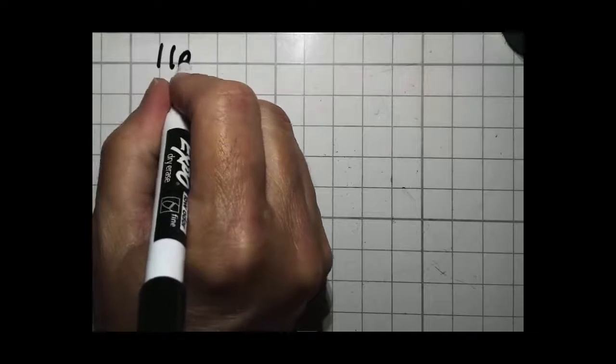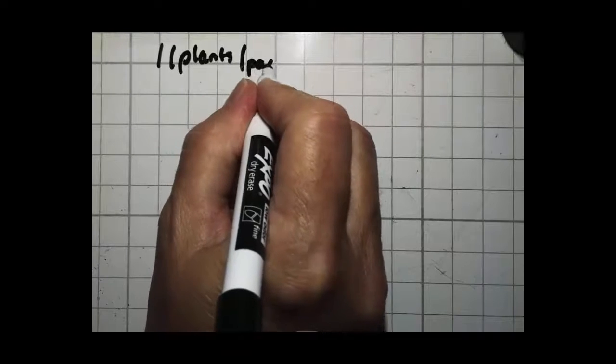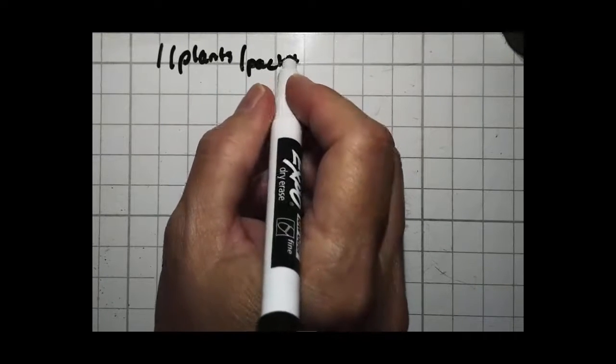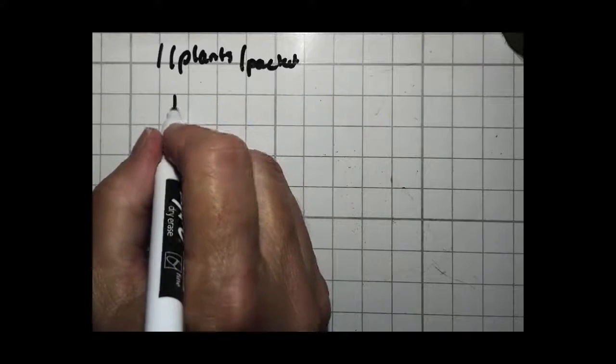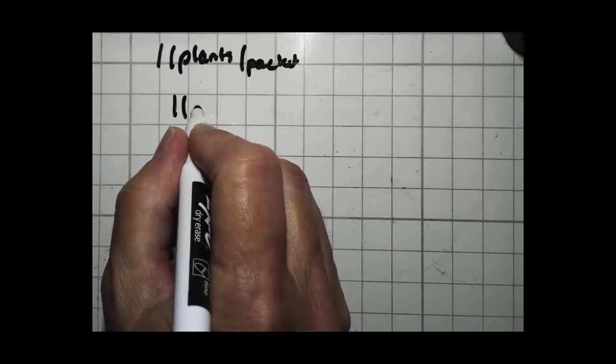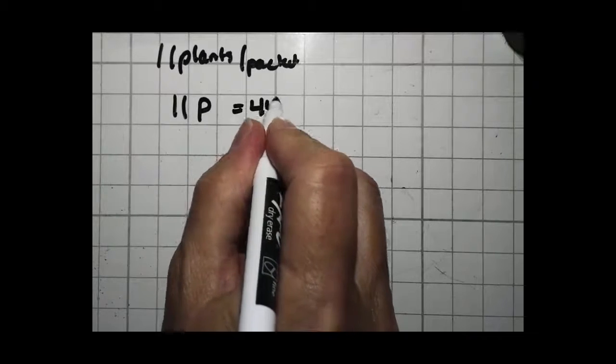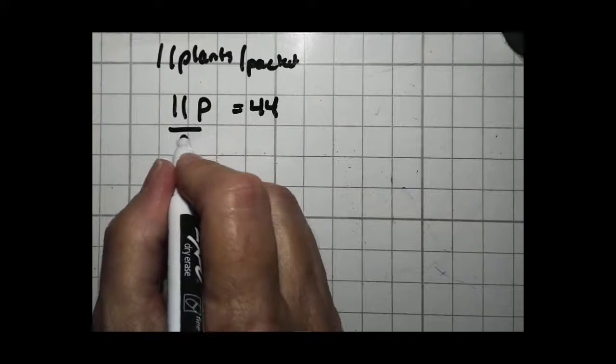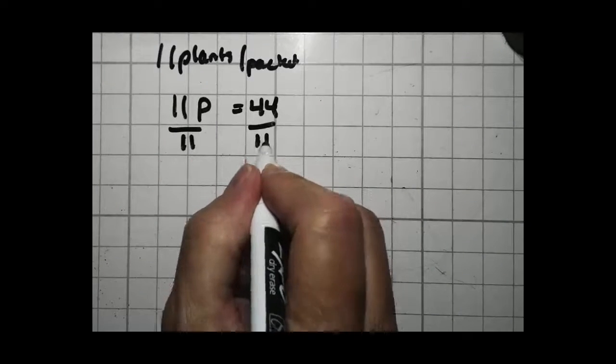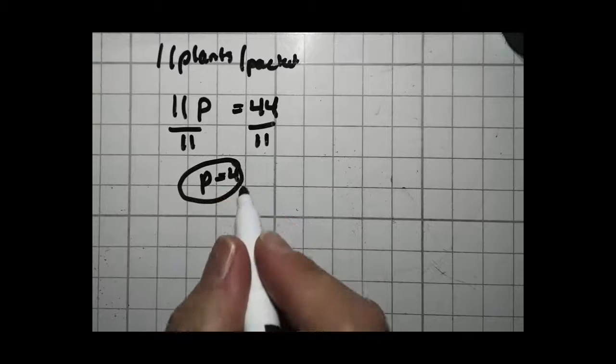Laura can grow 11 plants with every packet of seeds. So 11 plants per packet. How many seeds does she need to grow a total of 44 plants in her yard? So you have 11 plants times the number of packets equals 44 individual plants. So how many does she need? Simply solve for P. Divide both sides by 11 and you get P equals 4. She needs 4 packets.